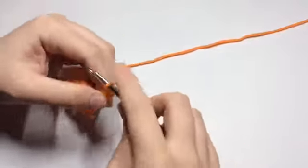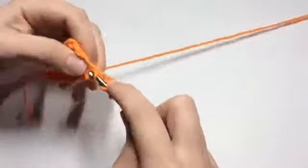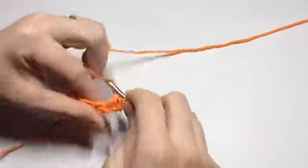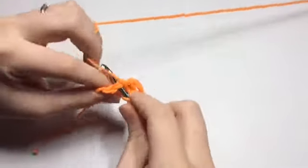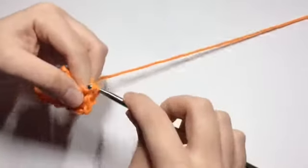Chain three again. Turn your work. Double crochet in the same stitch as the chain three. And then two double crochets all the way across.